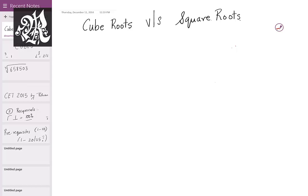Hey guys, I'm Rohan Rawal. Let me ask you a question today. What is easier to find — cube roots or square roots? Obviously, everybody thinks square roots are easy because it's just raised to 1/2. However, cube roots on the other hand are raised to 1/3. Let me change your perception about this today.